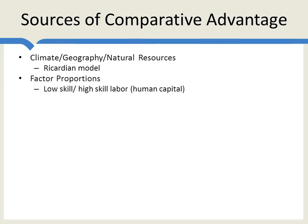Other countries have more high-skill labor. They have a comparative advantage in producing, for example, aircraft, which requires a lot of high-skill labor. This, by the way, is the Heckscher-Ohlin model, and a lot has been written about this model.